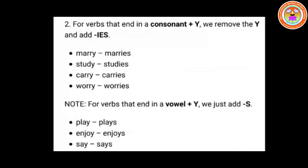For verbs that end in consonant Y, we take out that Y and add IES: marry → marries, study → studies, carry → carries, worry → worries. However, if there is a vowel before Y, we just add S: play → plays, enjoy → enjoys, say → says.